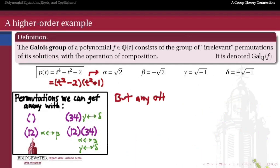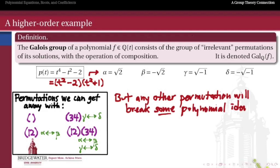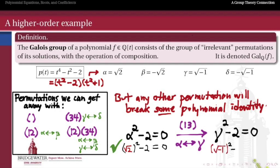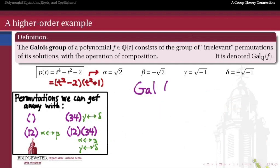There are some polynomials over the rationals that will break if I apply a permutation not in this list. For example, consider the polynomial α² - 2 = 0, which is satisfied by α. Now suppose I try the permutation (1 3), which swaps α with γ - that is, √2 with √(-1). We get the equation γ² - 2 = 0. But γ is the square root of minus 1, so γ² = -1, and that equation is not satisfied. So the transposition (1 3) will be noticed - namely, the polynomial α² - 2 will notice when I swap 1 with 3. So (1 3) is not going to be an element of our Galois group.